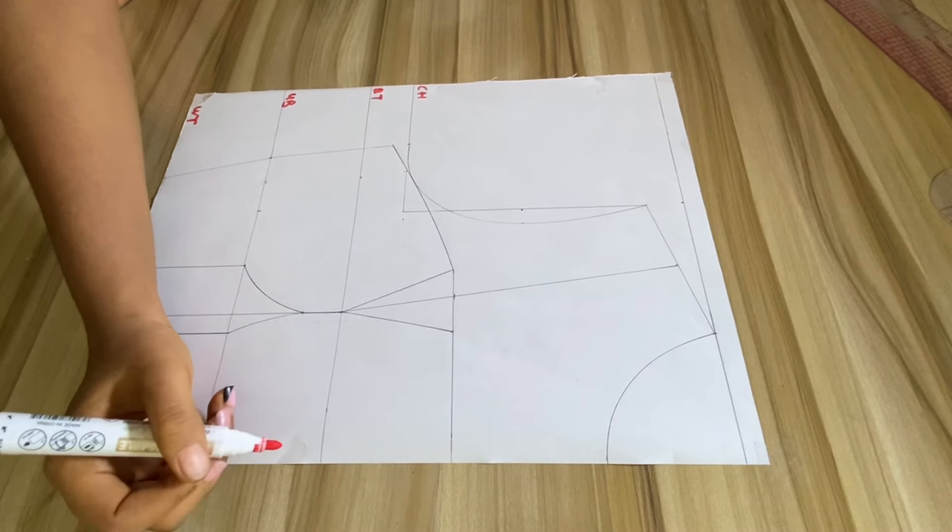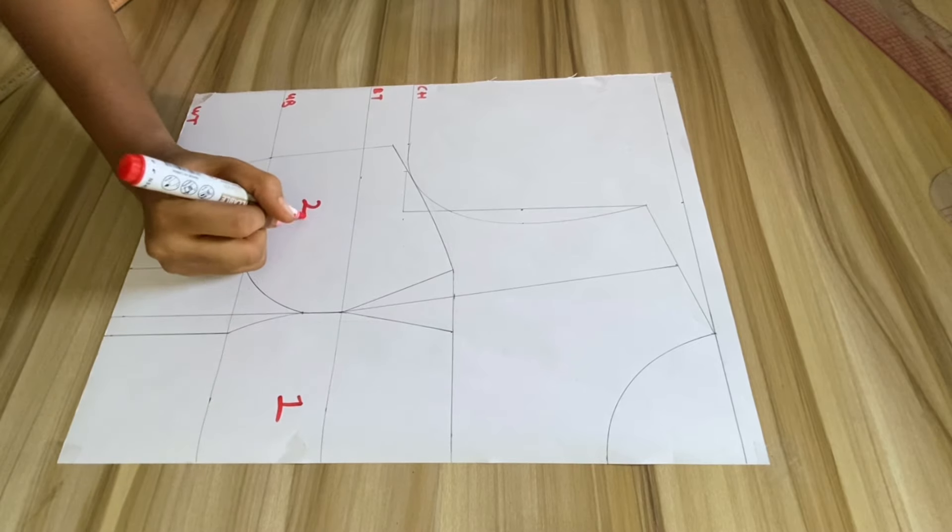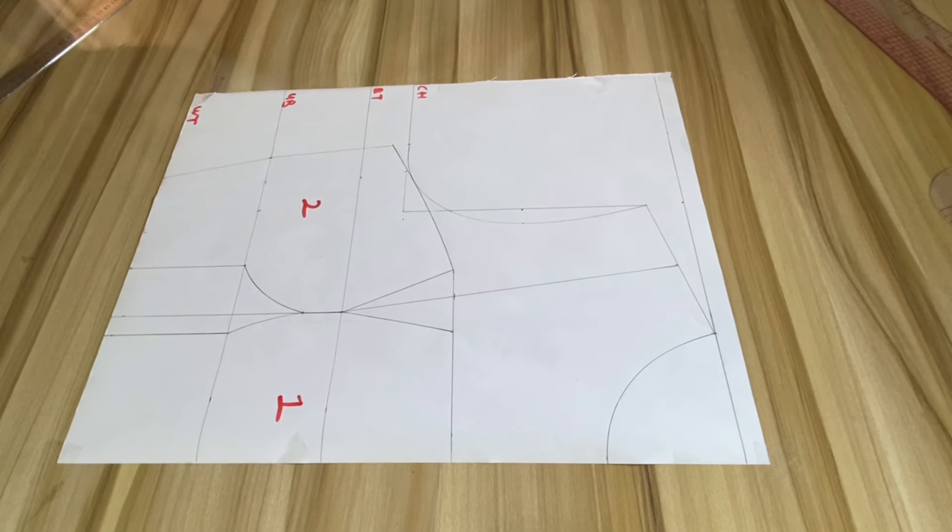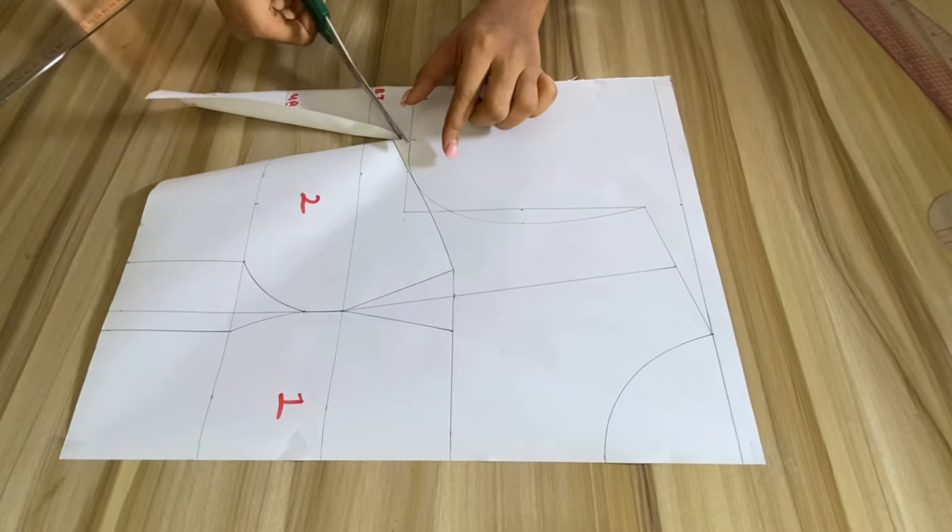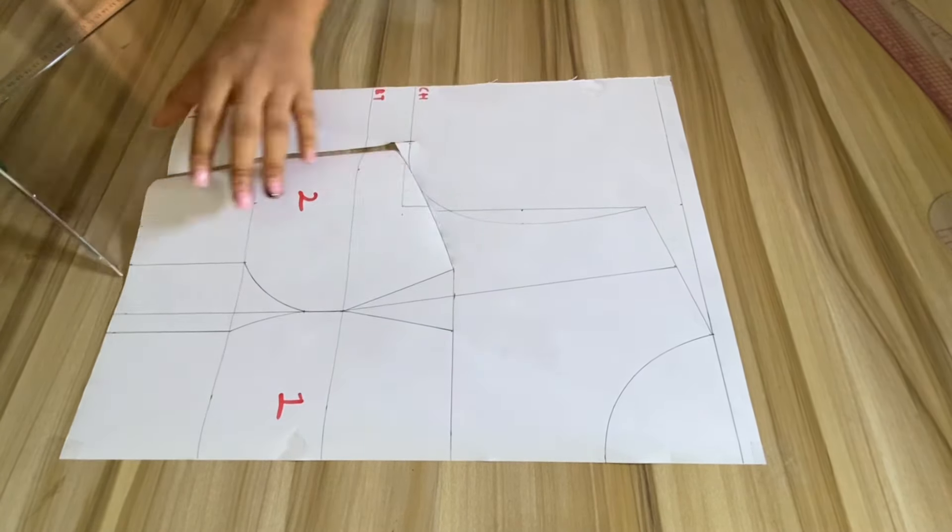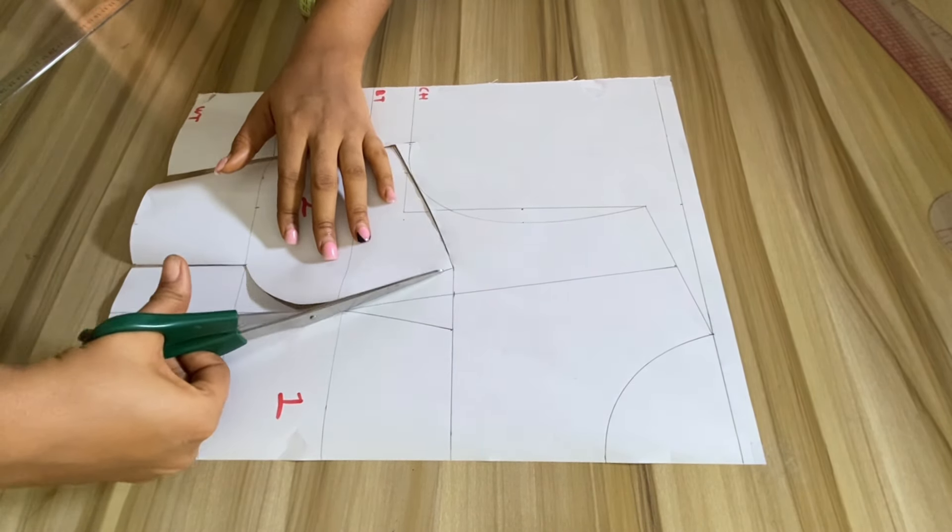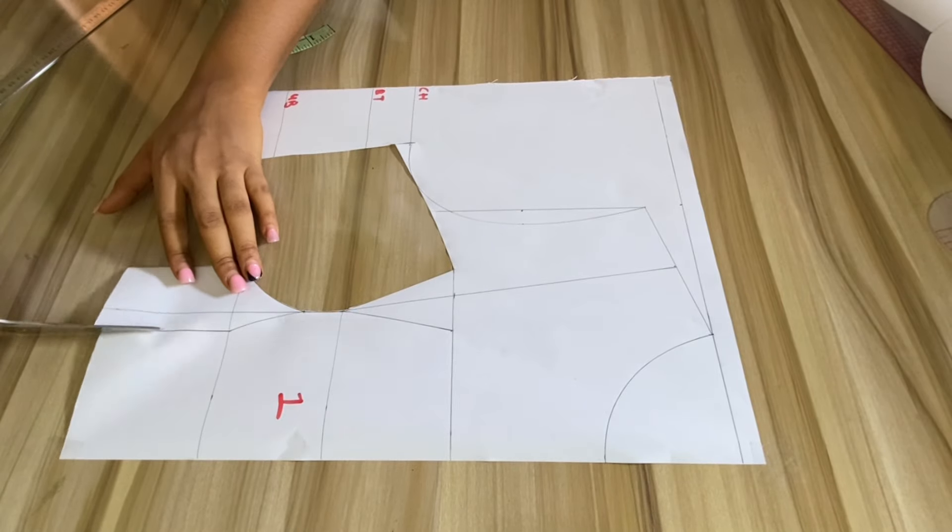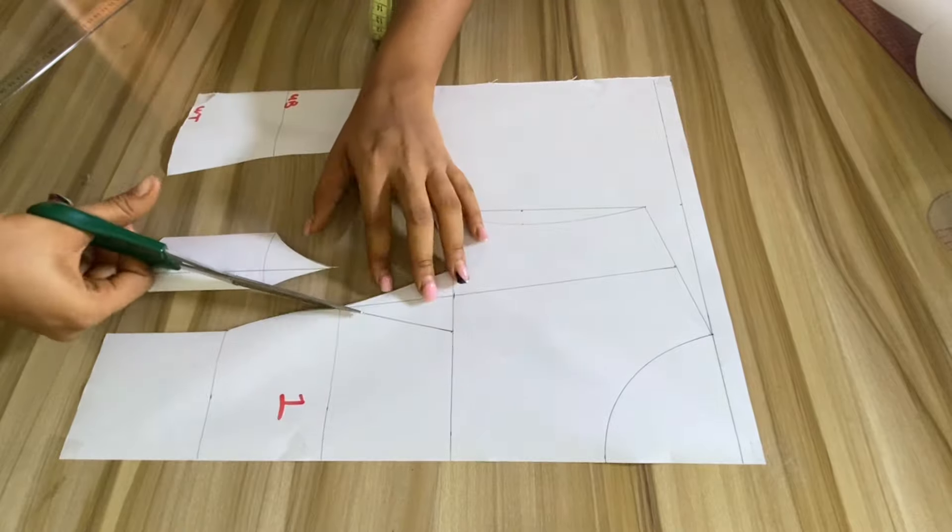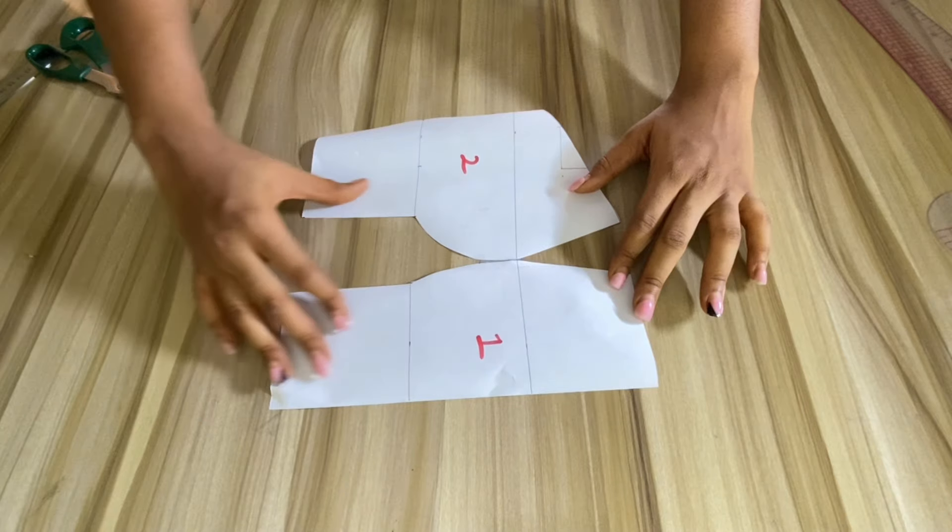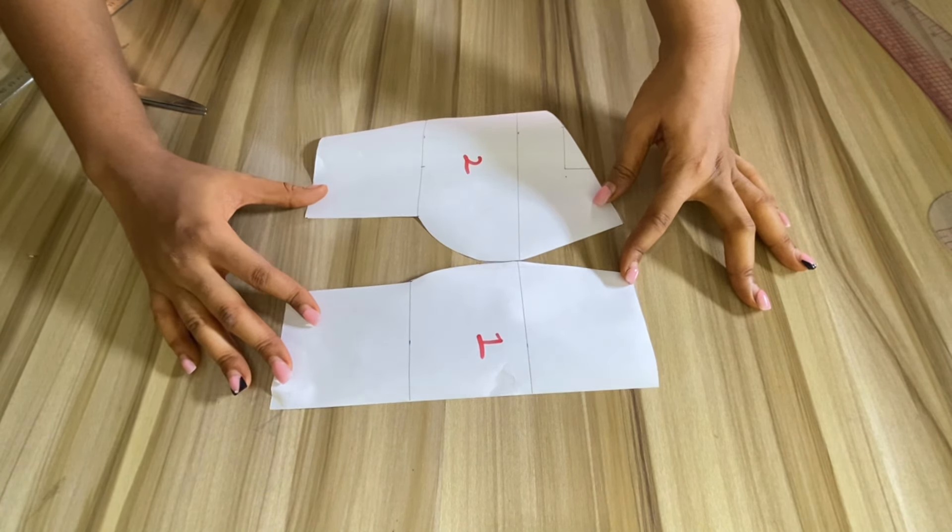This is how it looks. The next step is just for me to label it so I can cut it out. And here we have it. This is how the front looks like, and in my next video I'll show you how to draft the back.